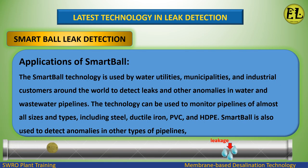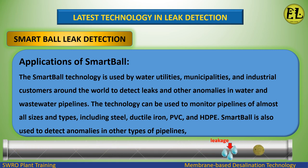The smart ball technology is used by water utilities, municipalities, and industrial customers around the world to detect leaks and other anomalies in water and wastewater pipelines. The technology can be used to monitor pipelines of almost all sizes and types, including steel, ductile iron, PVC, and HDPE. Smart ball is also used to detect anomalies in other types of pipelines.